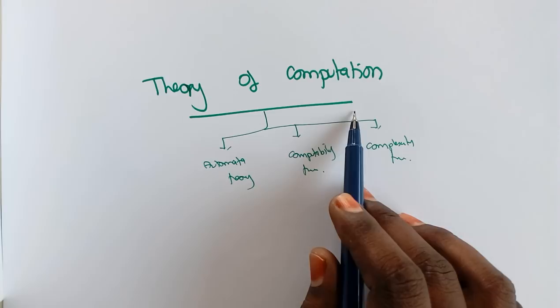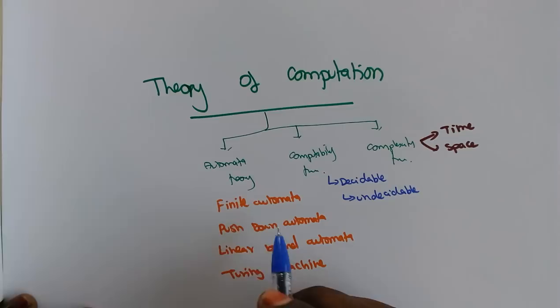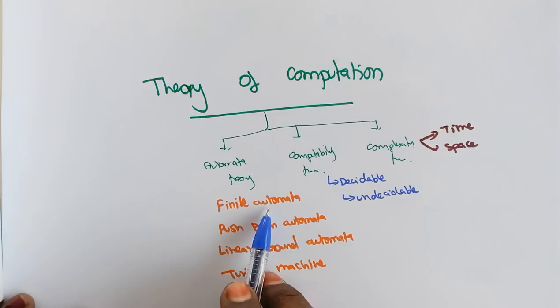That entire study we call the Theory of Computation. In Automata Theory, there are four major mathematical models that are studied. The first one is Finite Automata.